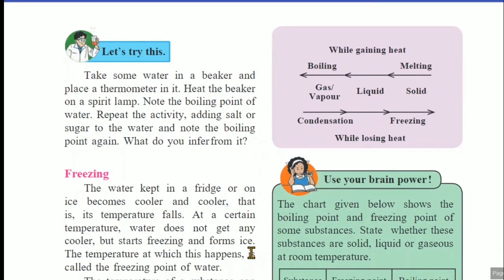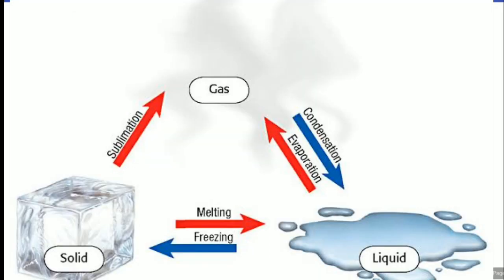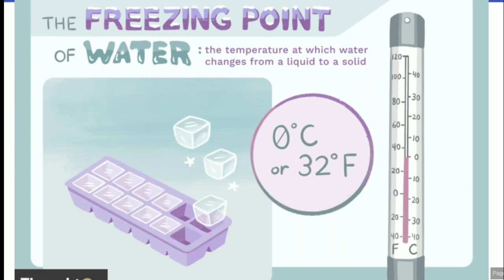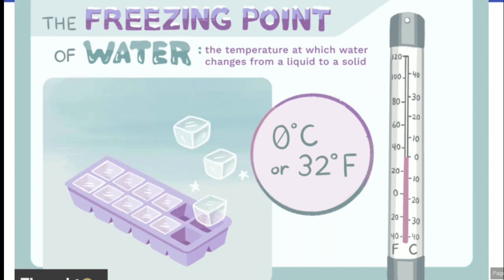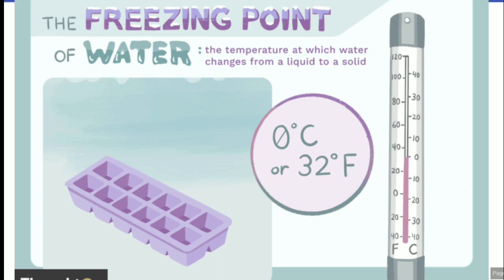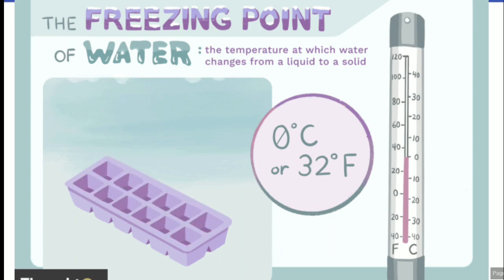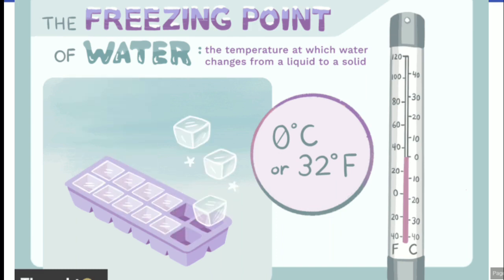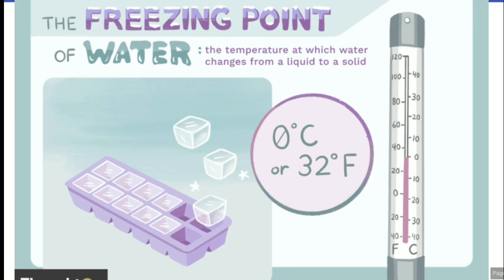Today we are going to start the concept of freezing. In freezing, the water kept in a fridge or on ice becomes cooler and cooler — that is, its temperature falls. At a certain temperature, water does not get any cooler but starts freezing and forms ice. The temperature at which this happens is called the freezing point of water. That means, as a substance cools down, its freezing starts and it converts into ice — that point is called the freezing point.